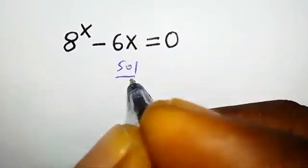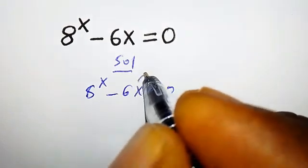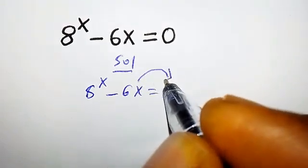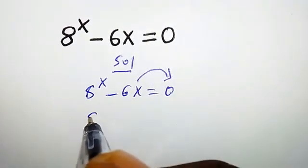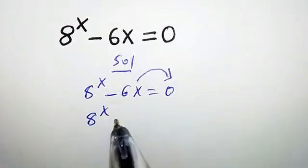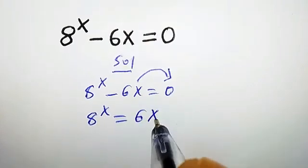Solution. The first step we are going to take is to transfer 6x to the right side. So we are going to have 8 to the power of x equal to 6x.